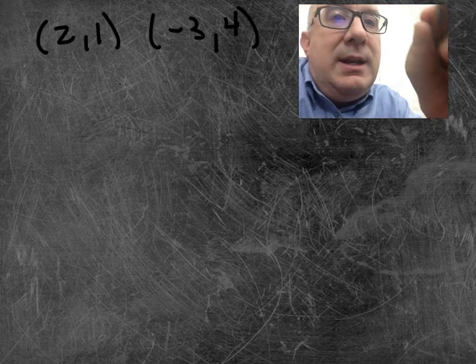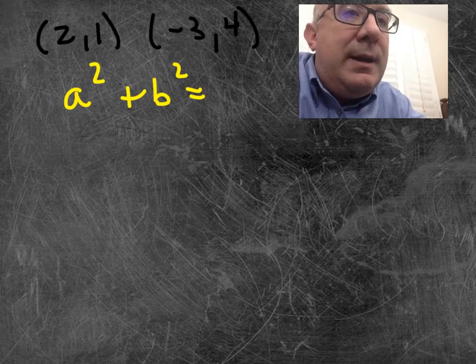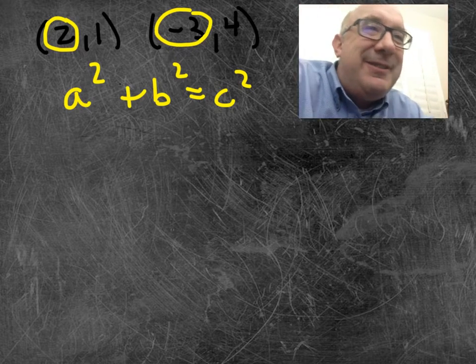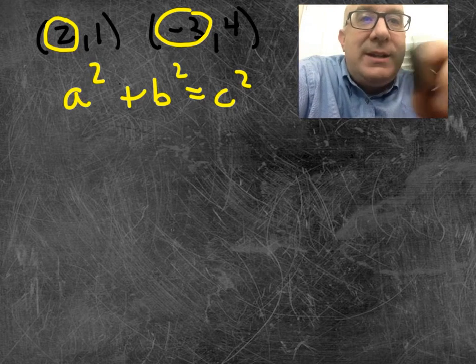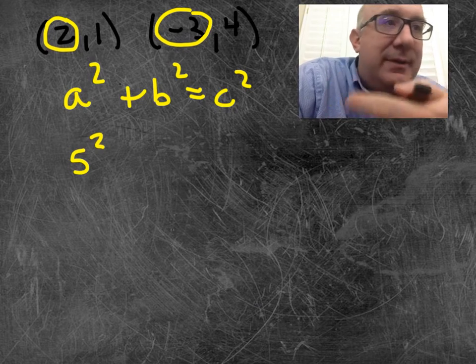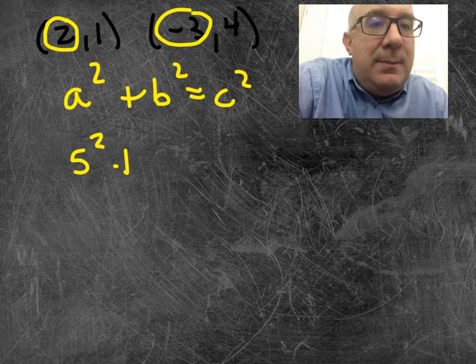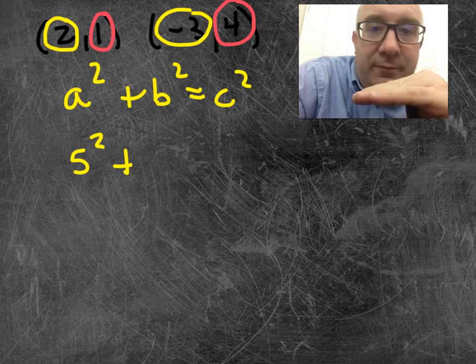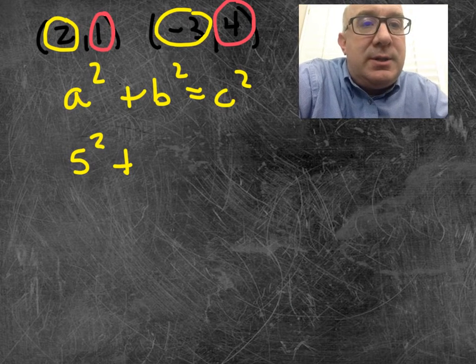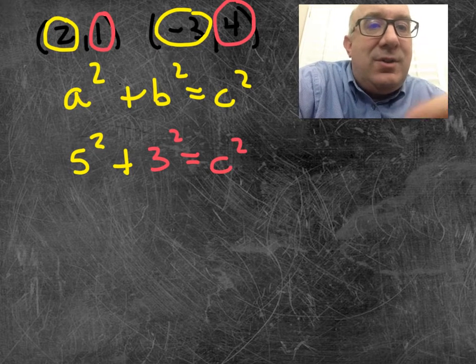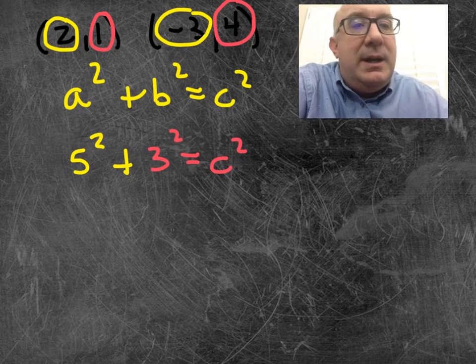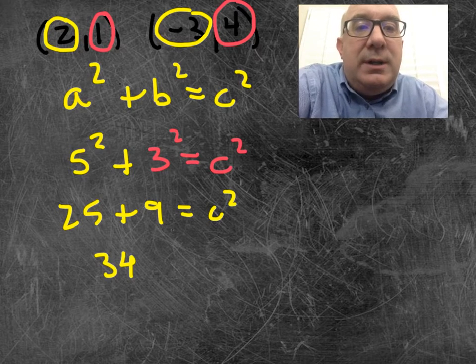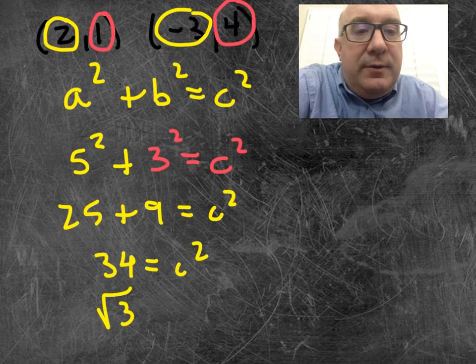Now what I do is, again, I think of the Pythagorean theorem. And I say, how far did I go from 2 to negative 3? That's the difference in that x value. And that's just 5. And I don't worry about whether it's positive or negative. If it's negative, it gets squared, becomes positive. So I'm good to go. And then I want to know, what's the difference in my y values? And the distance from 1 to 4 is just 3. And so it's just 3 squared. And then I can solve this thing. This isn't tricky for me. I can do this 25 and 9 equals c squared and 34 equals c squared and the square root of 34 equals c.